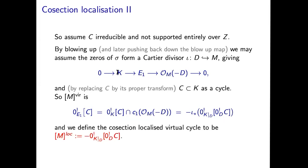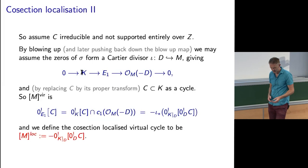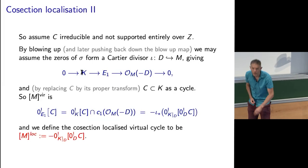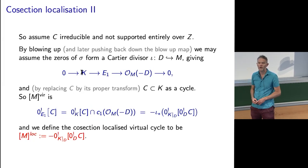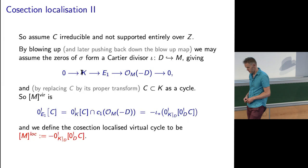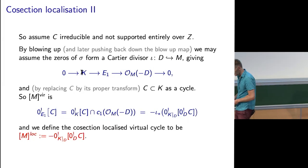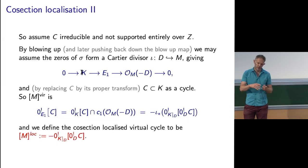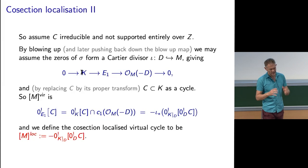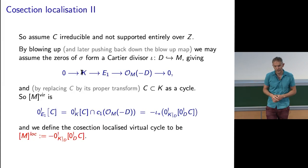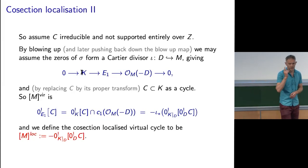How did we define the cone C? This is the Behrend-Fantechi cone from lecture one. Is the localized virtual class also a perfect obstruction theory over the zero set? No — there's this thing I keep referring to, that the cone is not scheme-theoretically in the zeros; it's only set-theoretically in the zeros, so then it doesn't work.